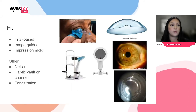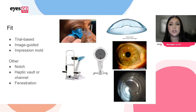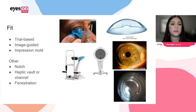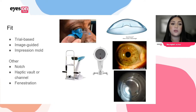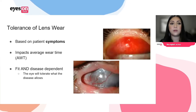To get an appropriate fit there are multiple ways to go about it: you could do conventional trial lens fitting, image-guided fitting, or impression mold technology. You can add specific features like a notch vault over anatomical obstacles, put a back surface channel, and of course you can add fenestrations, which we'll dive into a bit in this lecture as well.